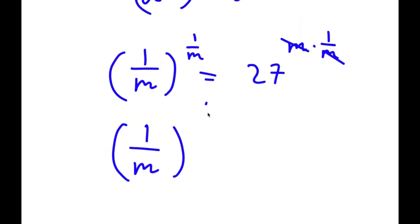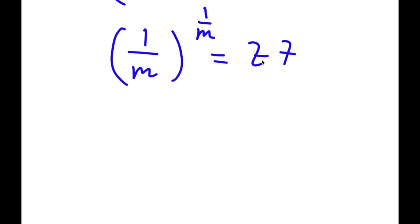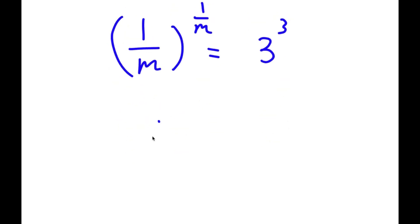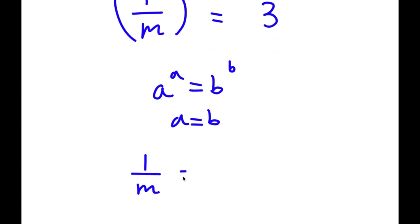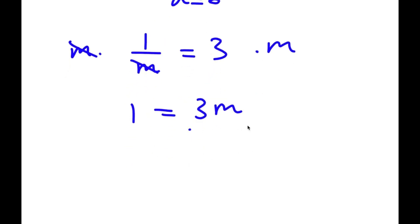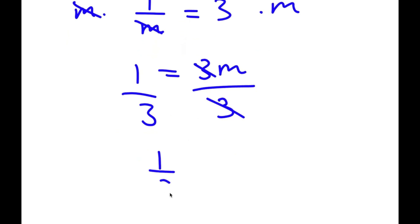So now I have 1 over m to the power of 1 over m is equal to 27. Now 27 is the same thing as 3 to the power of 3, so I have 1 over m to the power of 1 over m is equal to 3 to the power of 3. Since a to the power of a equals b to the power of b means a equals b, here 1 over m equals 3. Multiplying both sides by m and then dividing by 3 gives m equals 1 over 3.